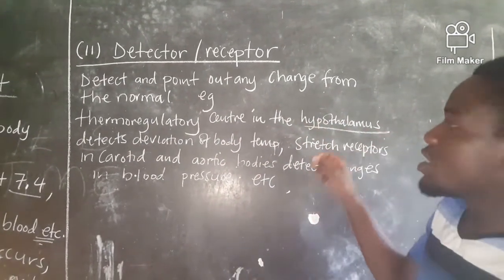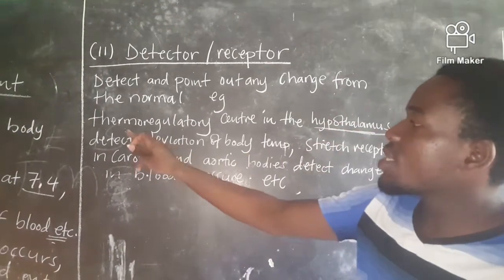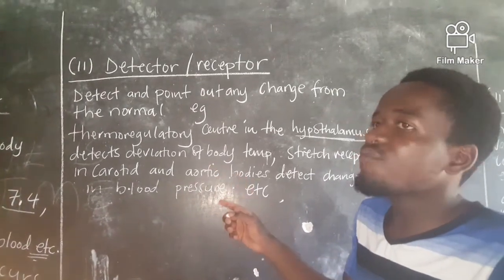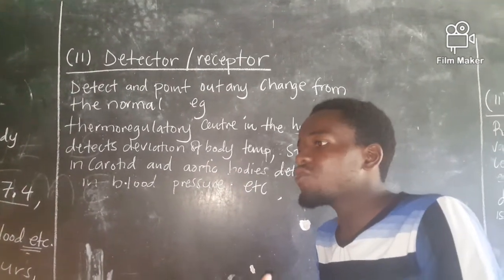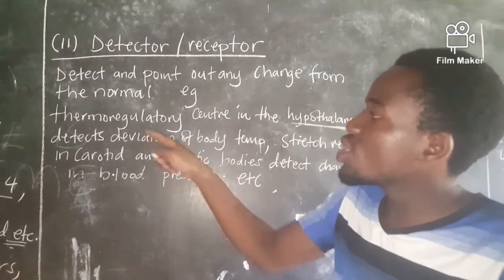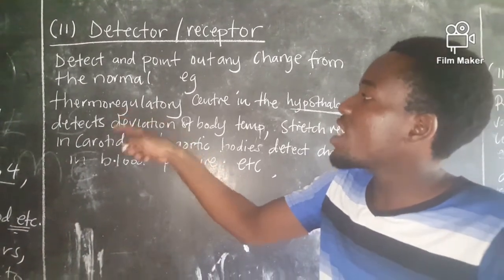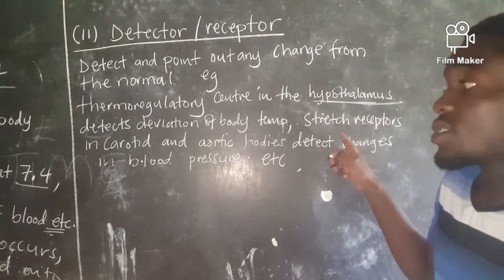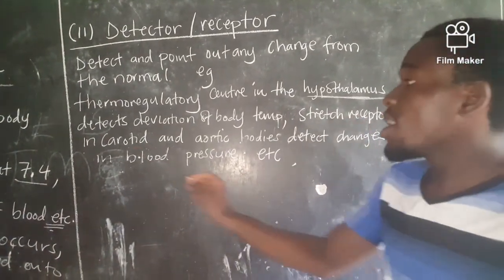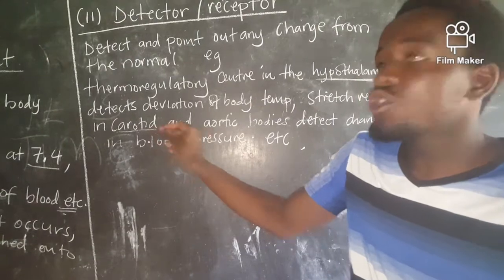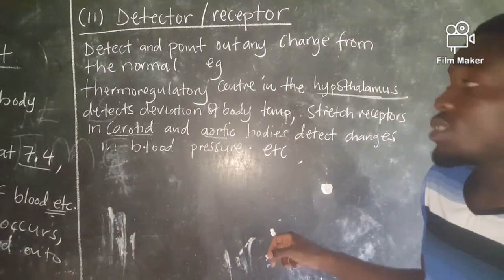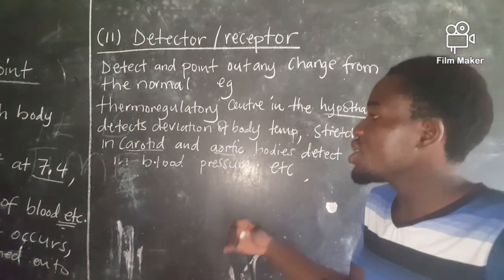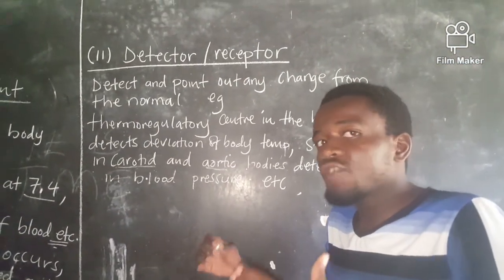An example of a detector is the thermoregulatory center in the hypothalamus — a part of the brain — which detects any change in body temperature as it increases or decreases. We also have stretch receptors, found in the carotid and aortic bodies in blood vessels, responsible for detecting changes in blood pressure.